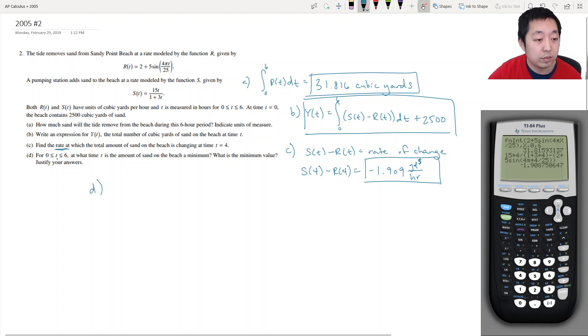So part D, for 0 to 6, at what time T is the amount of sand on the beach at minimum and what is the minimum value? So for Y of T, I want this to be minimum, and that happens when Y prime of T is equal to 0. Finding critical numbers.